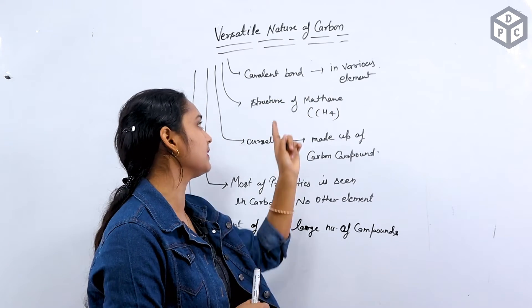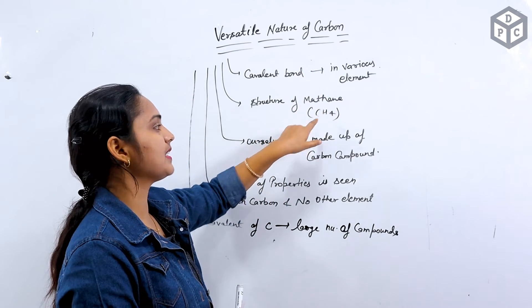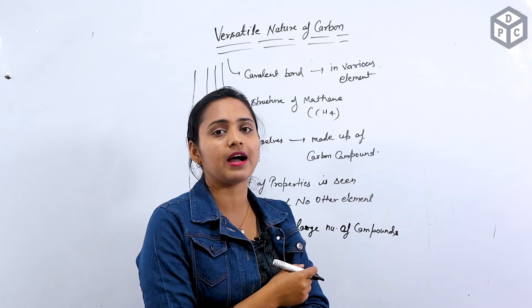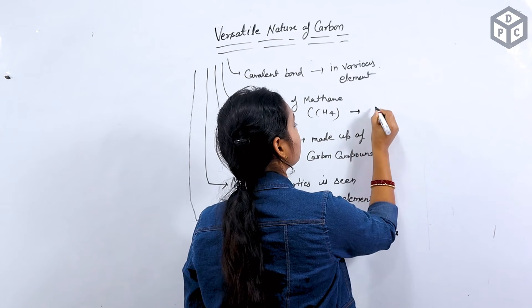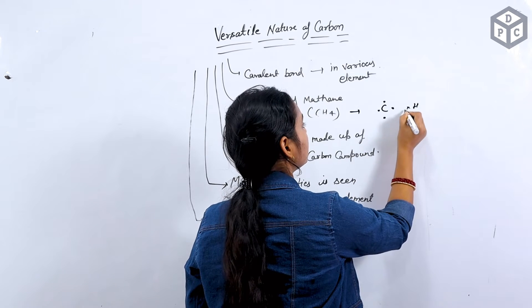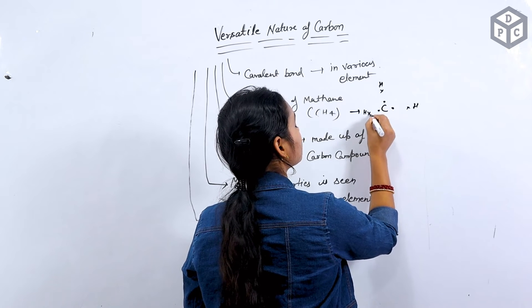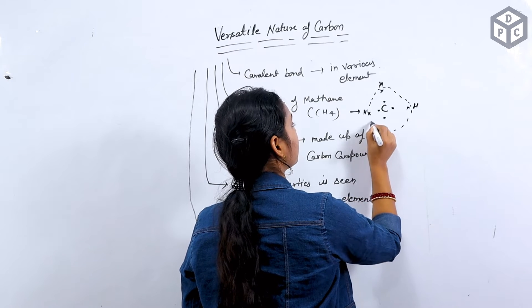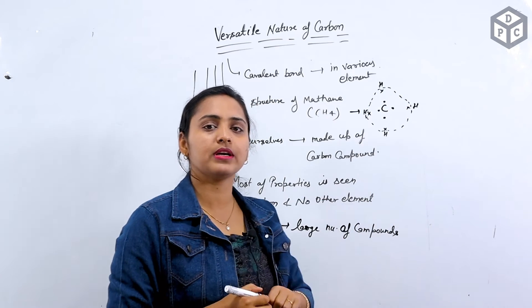The second thing is the structure of methane. The structure of methane we have studied earlier with covalent bond. If you see CH4, carbon has 1, 2, 3, 4 valence. Hydrogen, hydrogen, hydrogen and hydrogen. So you can see that this valence will be complete. This will become carbon octet complete and hydrogen's duplet bond will be complete. In this way, the covalent bond is complete.